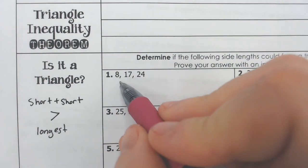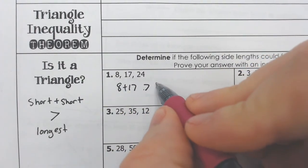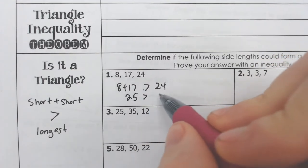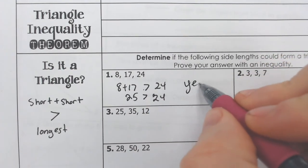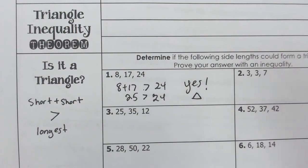So if I look at this one, if I add up 8 and 17, is that greater than 24? Well, 8 plus 17 is 25. That is greater than 24. And the answer is yes, this is a triangle then. Ta-da. That is that simple.